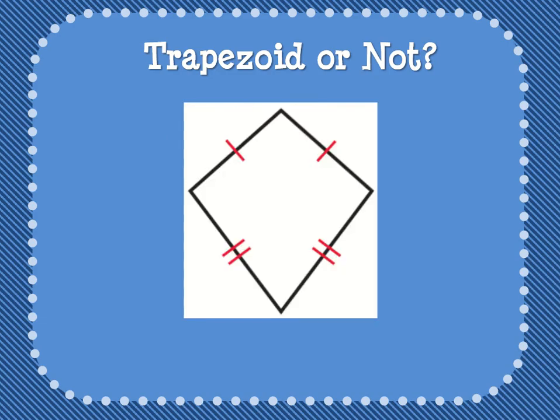Moving on — our last one. Trapezoid or not? It has markings for which sides are congruent or equal. The two top ones are congruent and the bottom ones are congruent. Is it a trapezoid? I hope you said no, this is not a trapezoid, because this side is not parallel to this side.